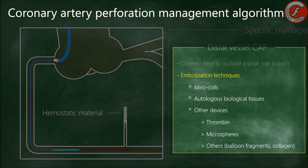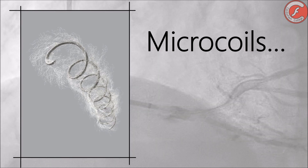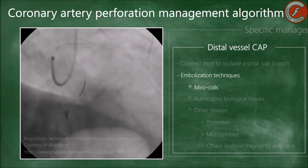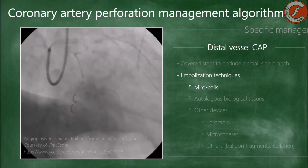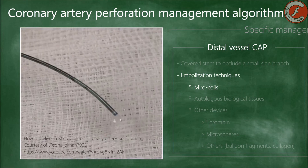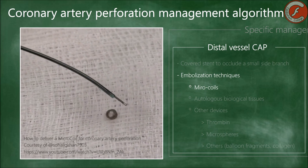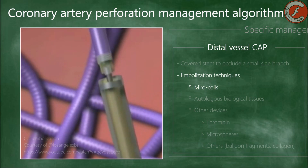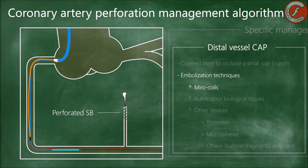Microcoils are spiral metal filaments with thrombogenic properties. These devices have a caliber ranging from 0.014 to 0.018 inches and are released in the area of interest by pushing them through a microcatheter. In some cases, these devices can be released through a controlled uncoupling mechanism, allowing more accurate results. It is recommended to choose coils long enough to guarantee total occlusion in the lumen of the perforated vessel.